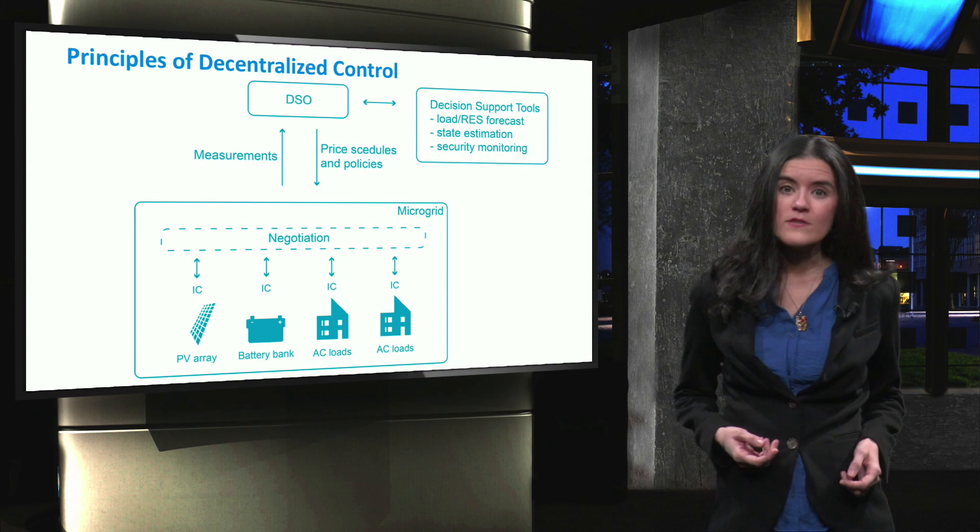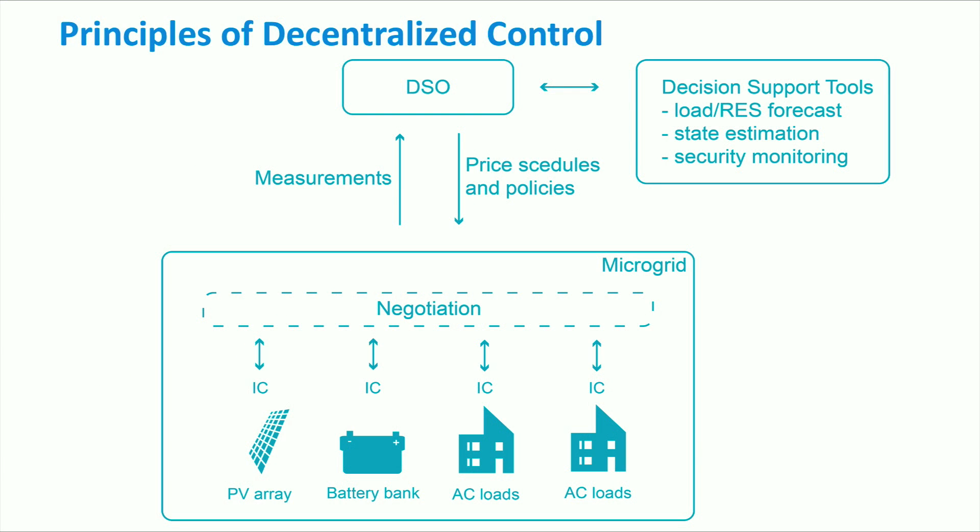In a decentralized control scheme, the internal microgrid control takes place at each controllable element in the microgrid. A negotiation among the different actors may take place, especially because, in this case, the different actors have different goals.